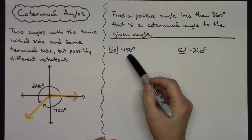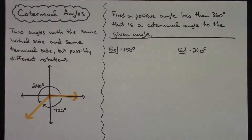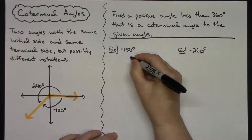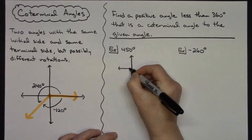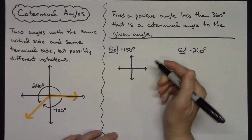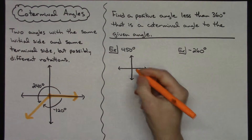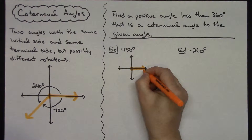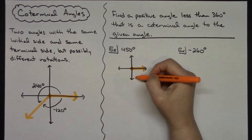Let's say we've got 450 degrees. It helps to visualize this a little bit before doing the math. So let's picture 450 degrees — if I start with my initial side there on the x-axis and go all the way around, I'm at 360 degrees.